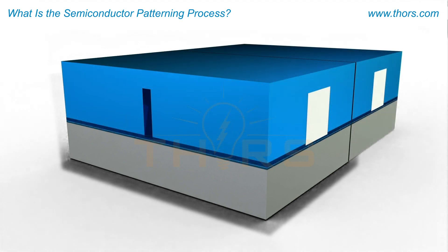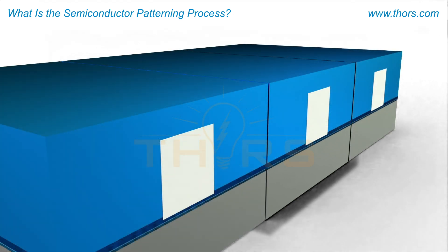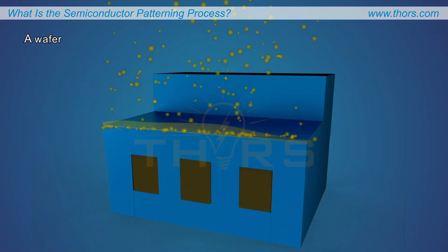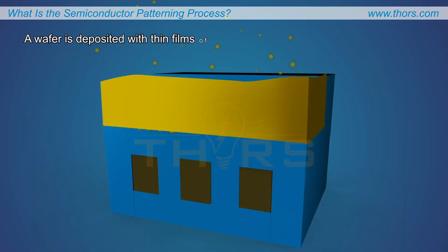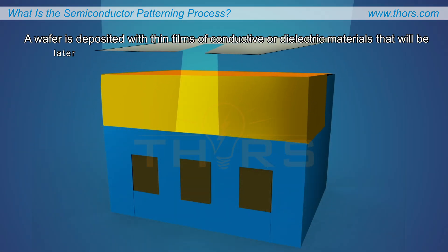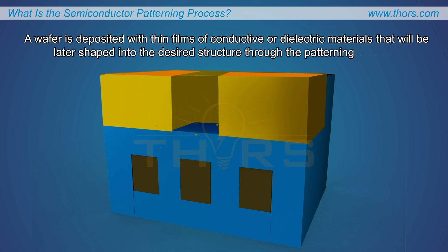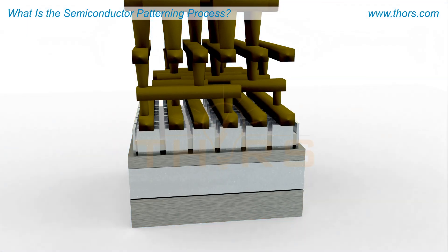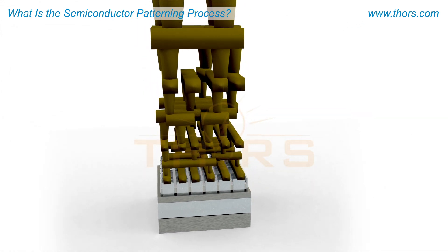A wafer is deposited with films of conductive or dielectric materials that will be later shaped into the desired structure through the patterning process. Patterning in semiconductor manufacturing is the technique by which predefined circuit designs are built on a wafer.